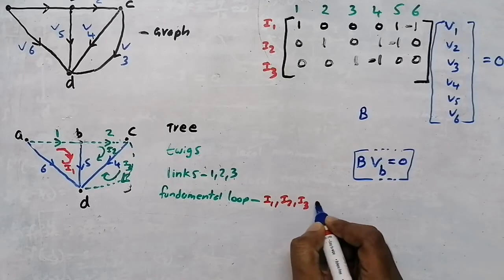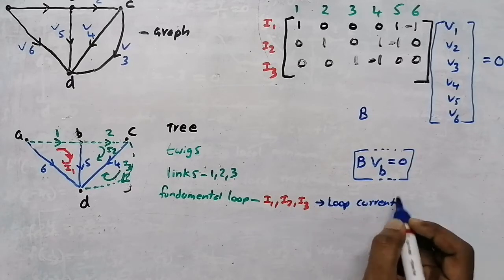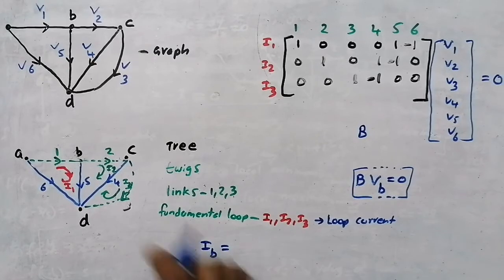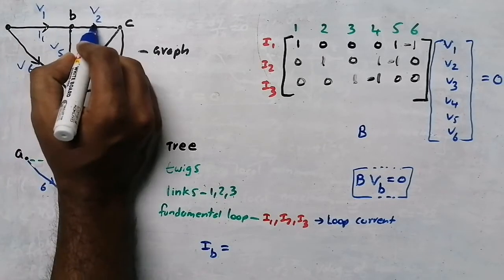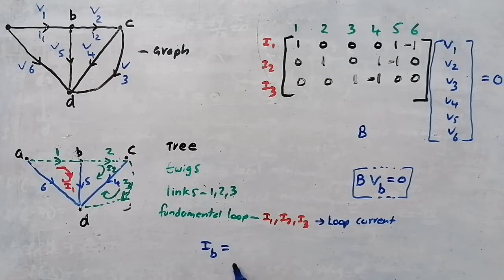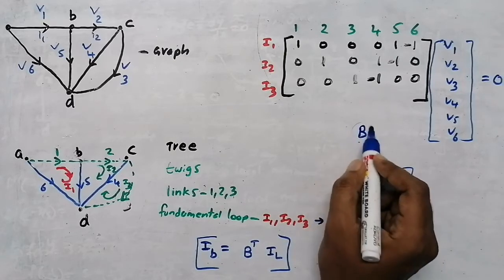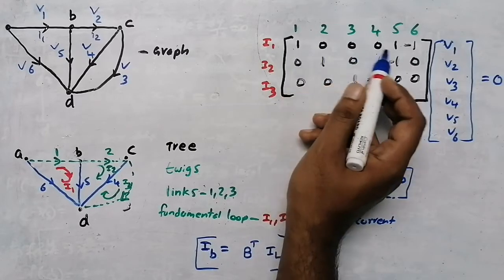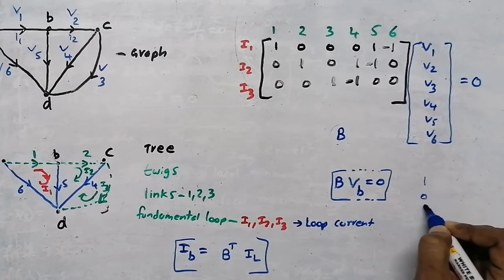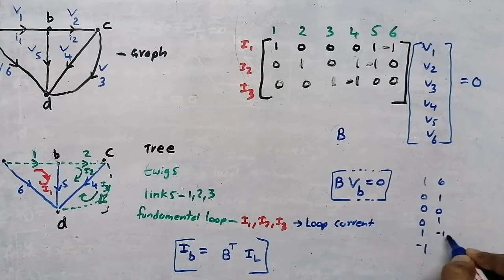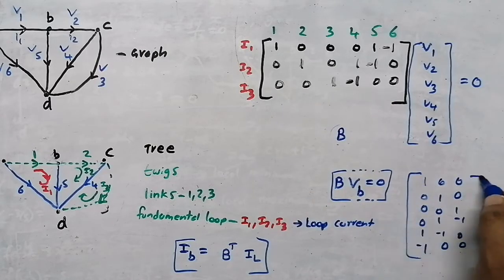One more property: we have three loop currents I1, I2 and I3, and we have the tie-set matrix B. To find branch current I_B, we multiply the transpose of the tie-set matrix by the loop current. The transpose B^T changes rows to columns. So B^T multiplied by the column vector [I1, I2, I3] gives us branch current — from branch 1 through branch 6.